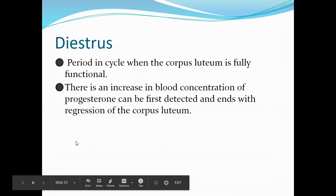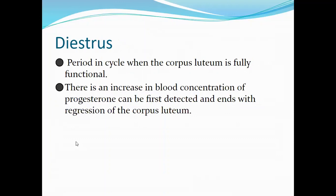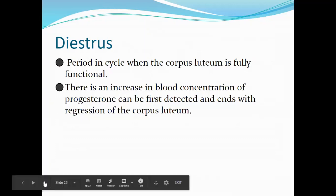Diestrus is the period in the cycle when the corpus luteum is fully functional. There is an increase in blood concentration of progesterone, and this phase ends with the regression of the corpus luteum. If the animal becomes pregnant, the animal is in the diestrus phase.